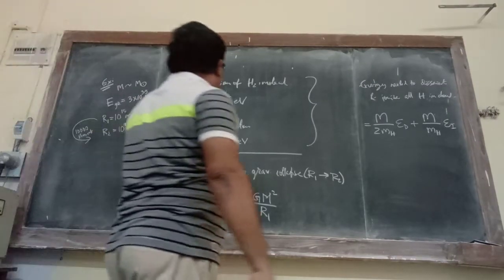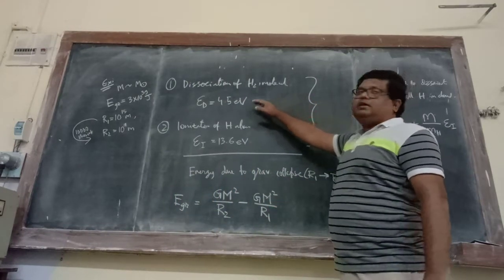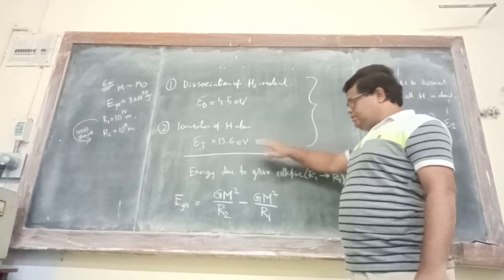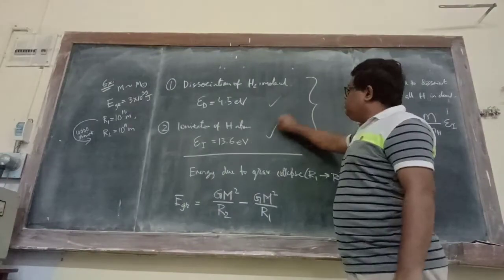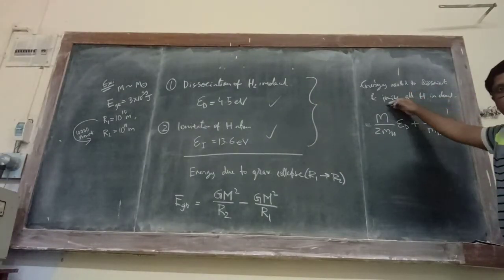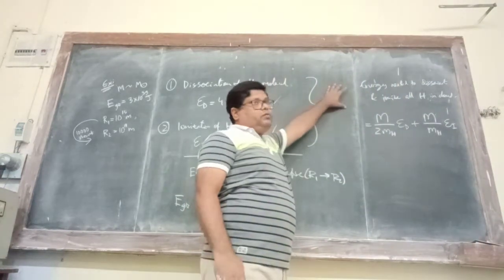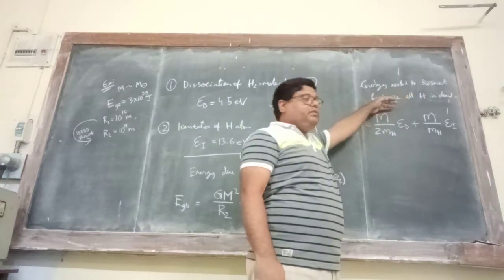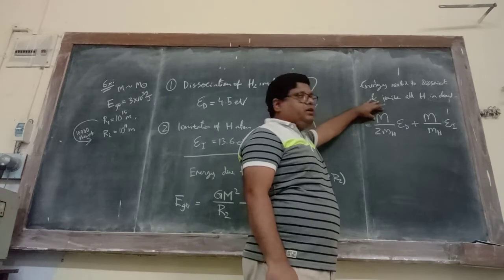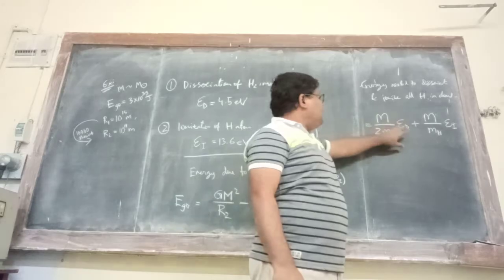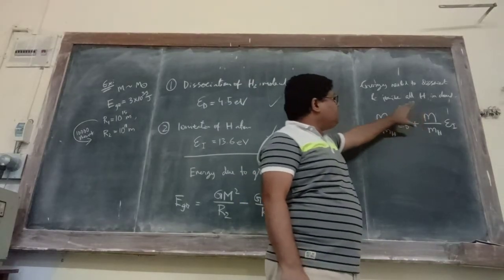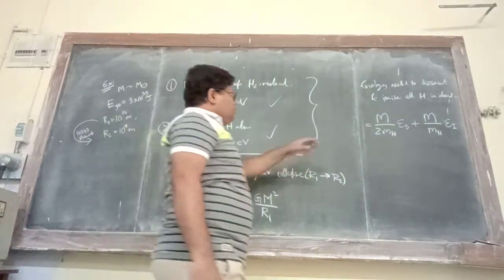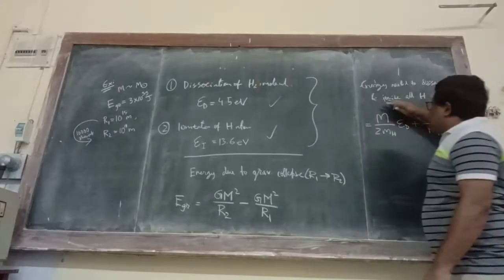That pressure will eventually be responsible for opposing gravity. So in the initial phase we have unopposed free fall. Later on, even though gravity is dominant, it is getting slowly opposition because now energy is going into thermal channels. The dissociation energy required for H₂ is 4.5 eV, and the ionization energy of hydrogen atom is 13.6 eV. The total energy needed to dissociate and ionize all the hydrogen — first molecules into atoms, then ionize them — is: (M/2m_H)×4.5 eV for dissociation, plus (M/m_H)×13.6 eV for ionization.